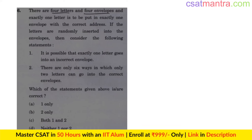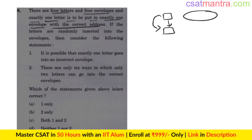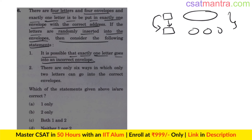There are four letters and four envelopes, and exactly one letter is to be put in exactly one envelope with the correct address. One letter will go in one envelope only, but we need to put only one letter with the correct address — the remaining three letters should go in wrong envelopes. If the letters are randomly inserted into the envelopes, consider the following statements: it is possible that exactly one letter goes into an incorrect envelope.